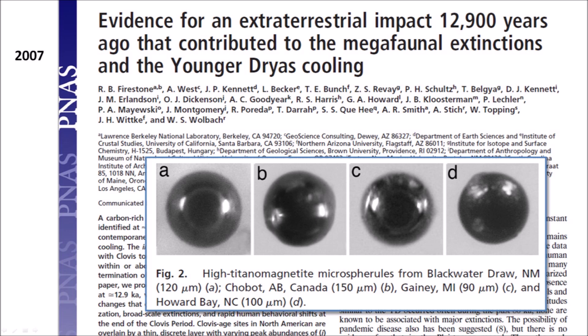The layer also contained charcoal, soot, carbon spherules, and glass-like carbon containing nanodiamonds. The paper proposed that one or more large, low-density extraterrestrial objects exploded over northern North America, partially destabilizing the Laurentide Ice Sheet and triggering the Younger Dryas Cooling. The shockwave, thermal pulse, and event-related environmental effects such as extensive biomass burning and food limitations contributed to the end-Pleistocene megafaunal extinctions.